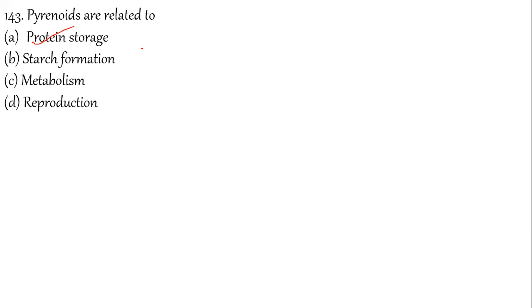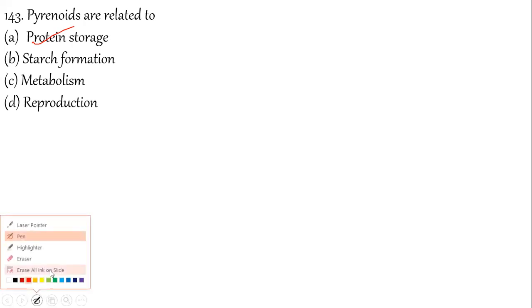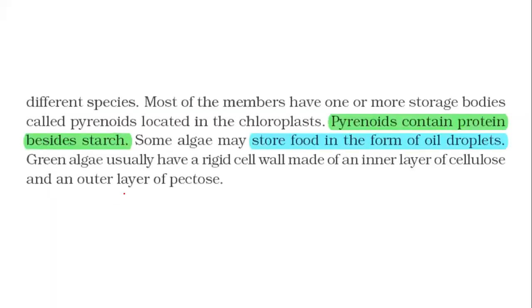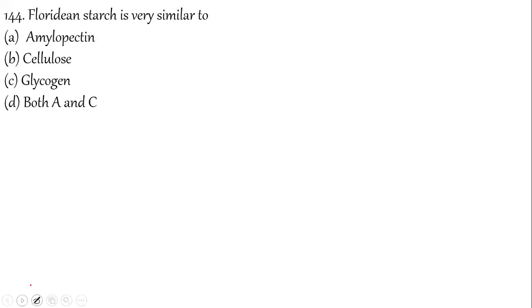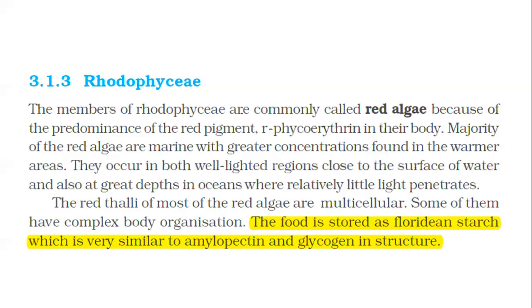Question 143: Pyrenoids are related to the storage of starch — not formation. Along with starch, protein is also found. Note: the answer key had a printing error; this will be rechecked and posted. Floridian starch has a structure similar to amylopectin and glycogen — this was a NEET 2020 question. NCERT states: the food stored is floridian starch, which is similar to amylopectin and glycogen.